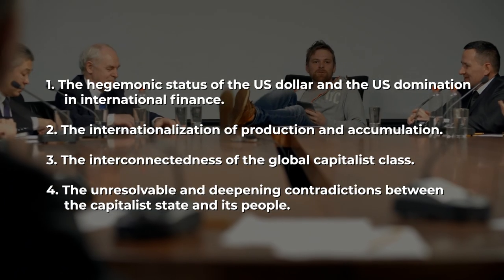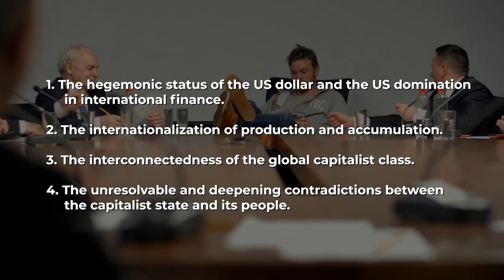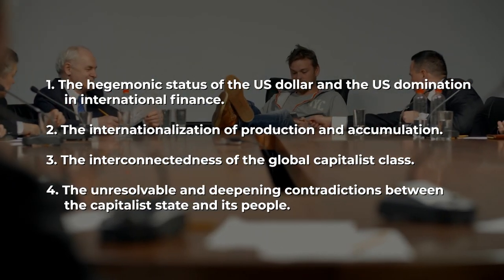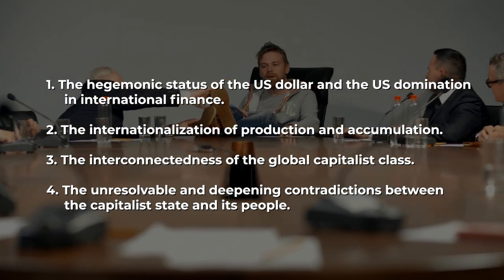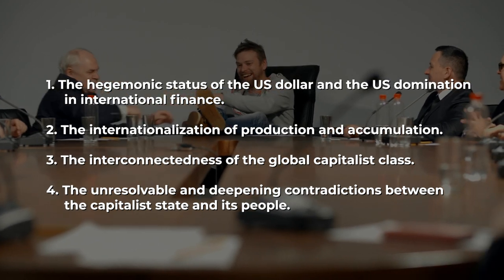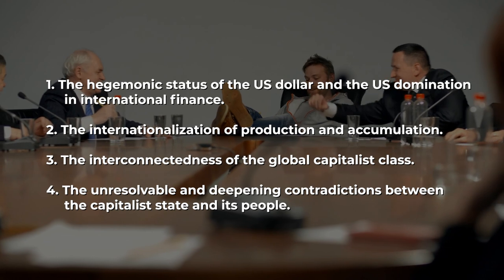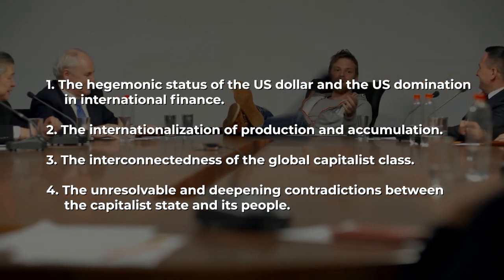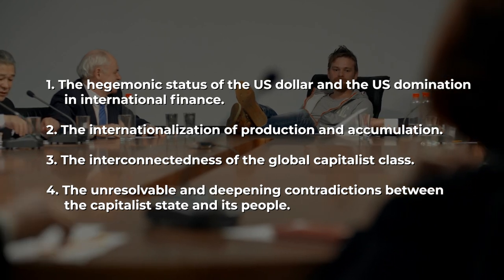Pao Yuching describes four characteristics of the current phase of imperialism: one, the hegemonic status of the U.S. dollar and U.S. domination in international finance; two, the internationalization of production and accumulation; three, the interconnectedness of the global capitalist class; and four, the unresolvable and deepening contradictions between the capitalist state and its people. Let's go over these characteristics.